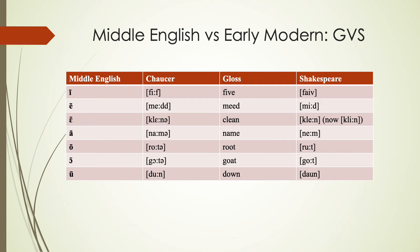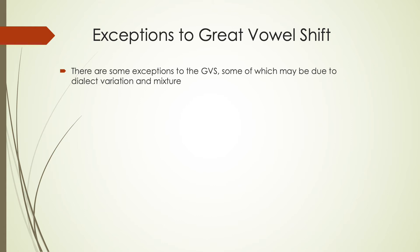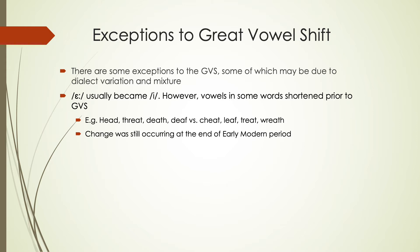There were exceptions to the Great Vowel Shift. Some vowels changed and some didn't due to dialect variation and exposure to other forms of language. The A sound usually became EE, but sometimes it didn't — especially in words that had shortened prior to this period. This is where we get the distinction between words like 'head,' 'thread,' and 'death' that didn't undergo the vowel change, versus 'cheat,' 'leaf,' 'treat,' and 'wreath' that did. All are in closed syllables, but some lengthened and some shortened, leading to different pronunciations even though we maintained the same spelling.